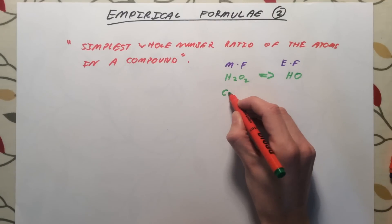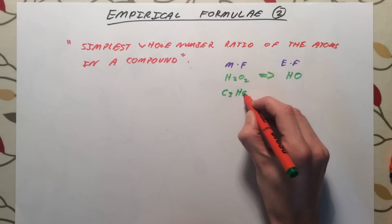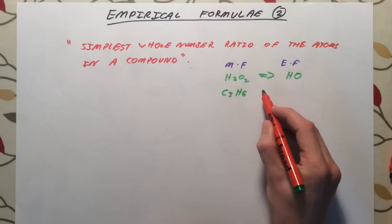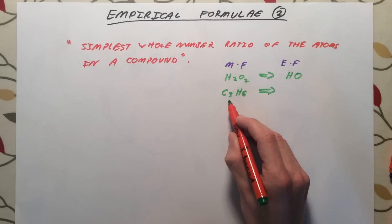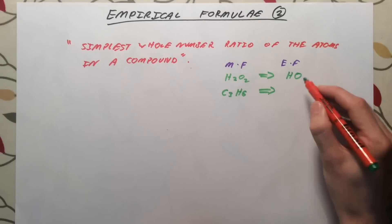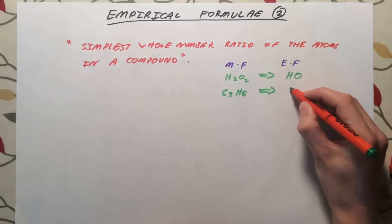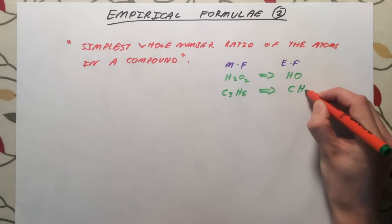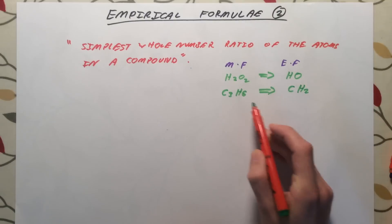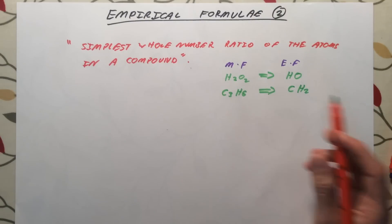A second example: C3H6, or propene. For every one carbon atom, we have got two hydrogen atoms. Therefore, our empirical formula is CH2 — there's just double the number of hydrogens as there are carbons.